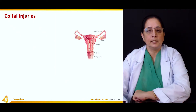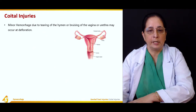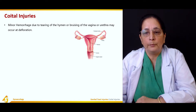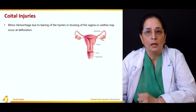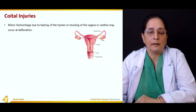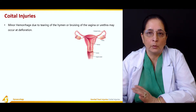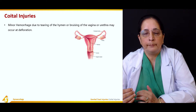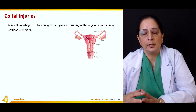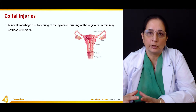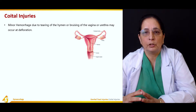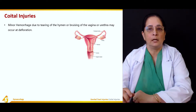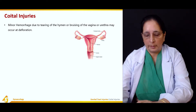Coital injuries include minor hemorrhage due to tearing of the hymen or bruising of the vagina or urethra, which may occur at defloration. These injuries are common especially at the time of first intercourse, when there is rupture of the hymen or bruising of the vagina or urethra.